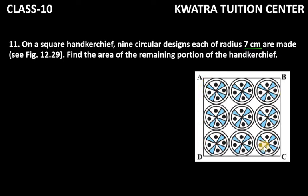So this is the handkerchief. ABCD is the handkerchief with 9 circular rings and designs. Now, this region where you can see white is the remaining portion.